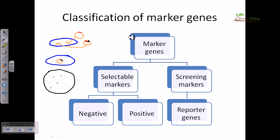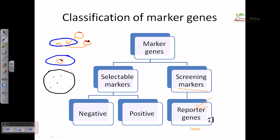Screening markers help us to screen between different types of marker elements. There are thousands of different expression types, and from those we need to screen a particular species. For example, from 100 different variations we want only that variation which changes in color but not in enzymatic activity or anything else. We can screen using the color-change property of a particular sequence and select what we want.